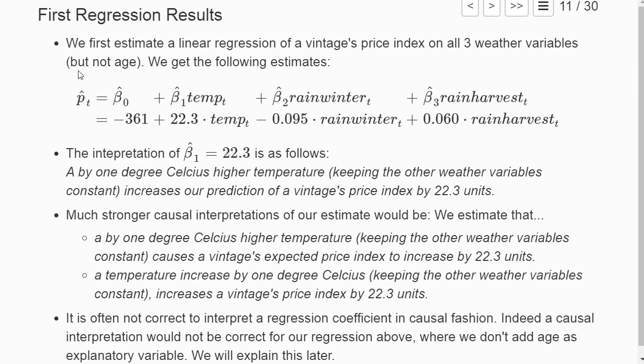We have now run a linear regression where we estimated the price index of a vintage in the 1990 auctions in London on three weather variables for the year where the vintage was harvested. We found an estimate of the coefficient in front of the temperature of 22.3, and the interpretation is that a by one degree Celsius higher temperature keeping the other two weather variables constant increases our prediction of a vintage's price index by 22.3 units.